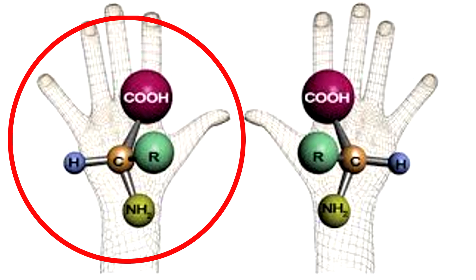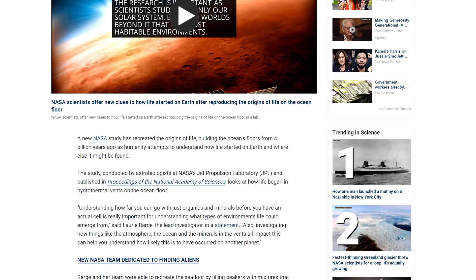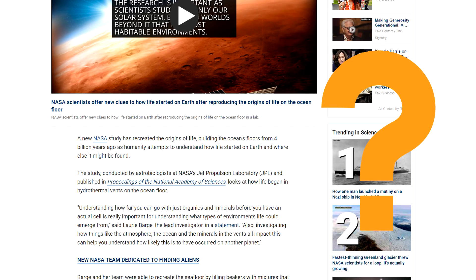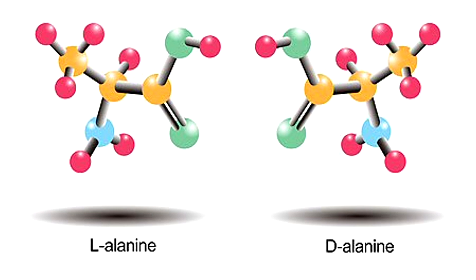What's even worse, because living cells only produce and use left-handed chiral variants of amino acids, the study did not indicate what type was produced. Most likely, it was a mixture of both left and right-handed molecules, which would be completely useless for life.